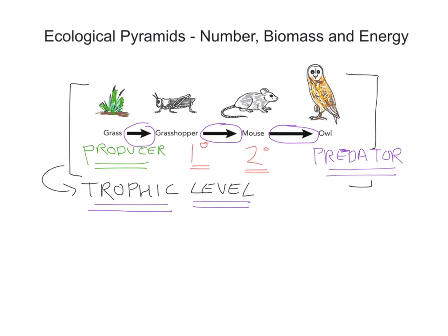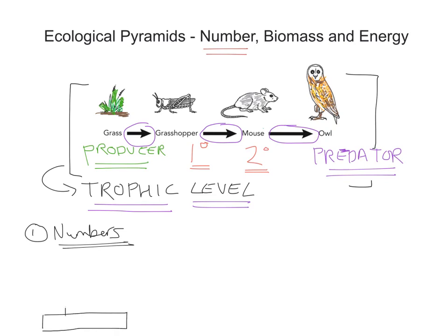The first of the pyramids we're going to look at is the Pyramid of Numbers. When we draw these pyramids, what we're drawing almost looks like a sideways bar chart — essentially just blocks or bars to represent each organism. I'm just going to draw an example. Here we go — a very simple pyramid of numbers. You can see I've drawn a block on top of another on top of another, with a very narrow one at the very top.